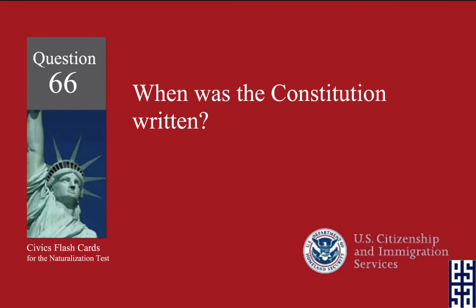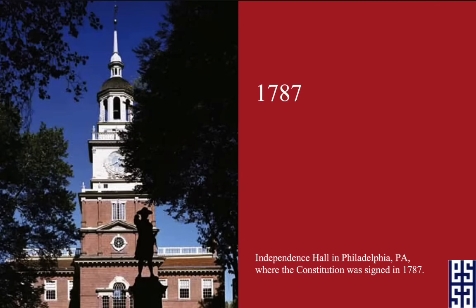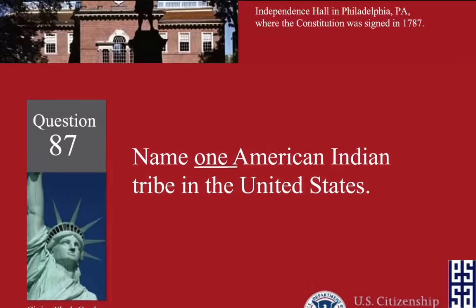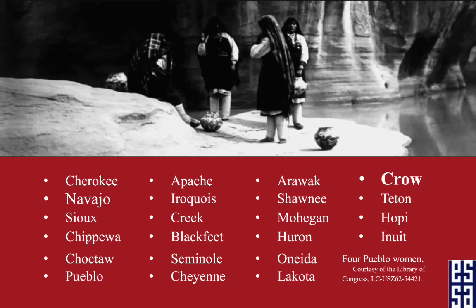When was the Constitution written? 1787. Name one American Indian tribe in the United States. Crow.